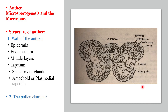Now we will see the structure of the anther. The anther structure consists of two parts: the wall of the anther and the pollen chamber. The wall consists of the epidermis, the endothecium, the middle layers, and the tapetum.